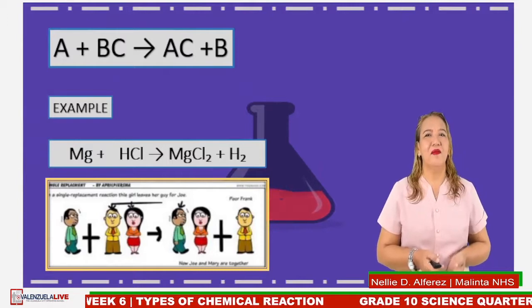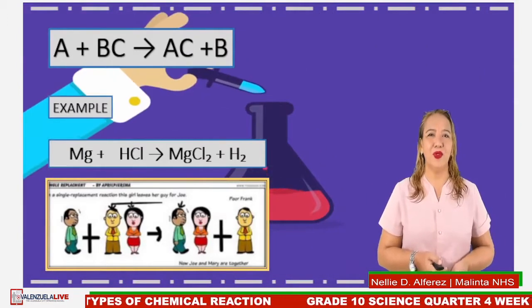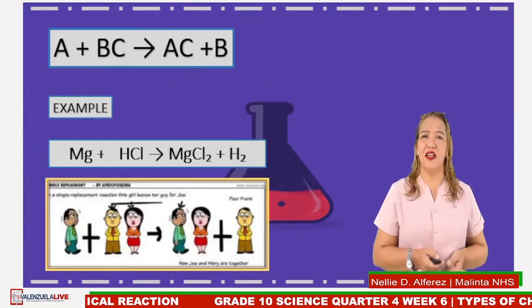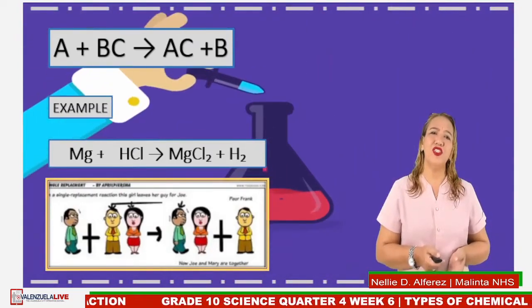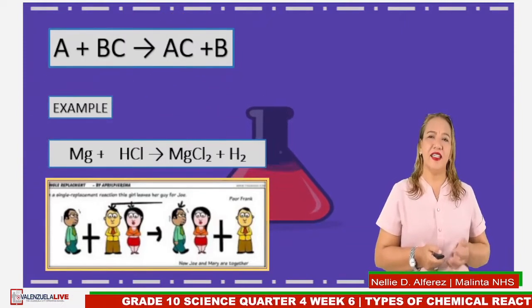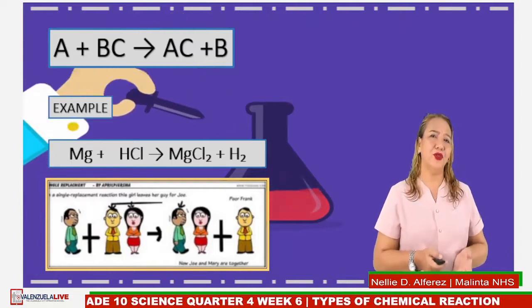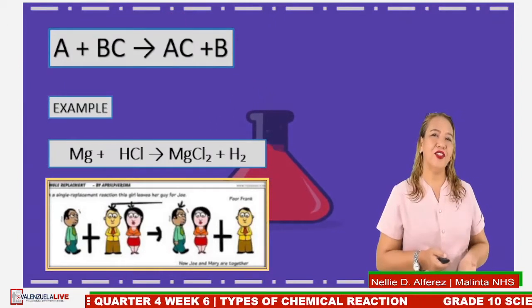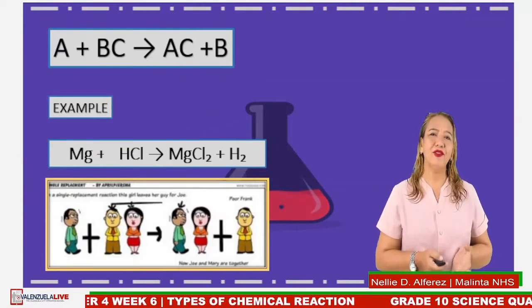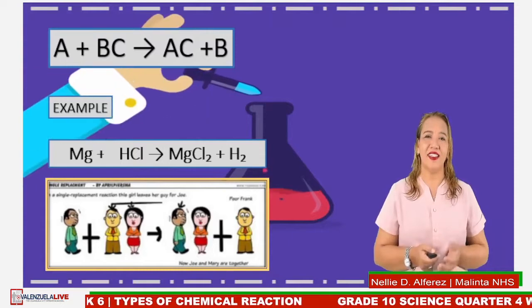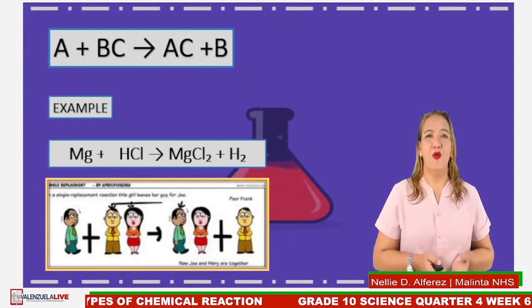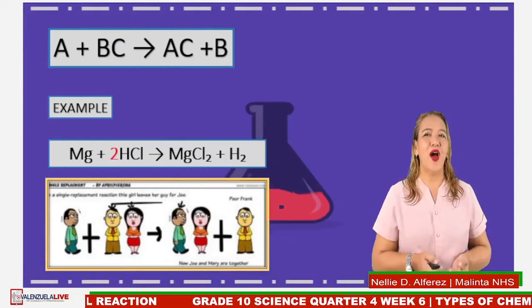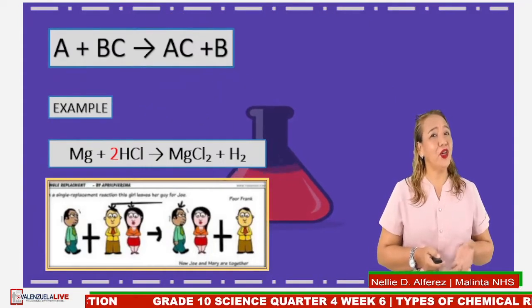For example, magnesium is added to hydrogen chloride and will produce magnesium dichloride and hydrogen. Notice that one element replaces another element in the compound. The equation is not balanced, so we have to use the trial and error method. Magnesium is already balanced, but hydrogen and chlorine are not. By adding the coefficient 2 to hydrogen chloride, the equation will now be balanced.